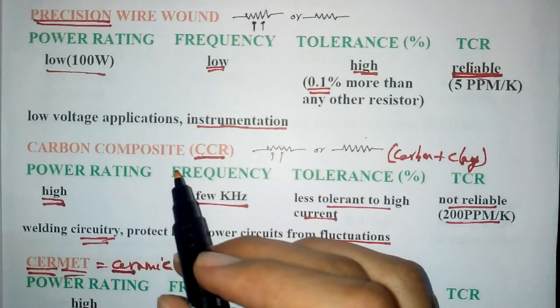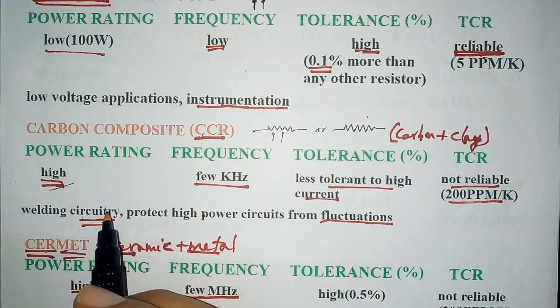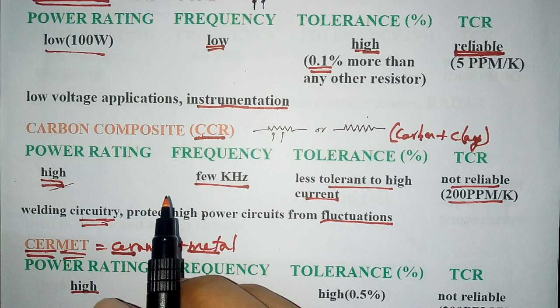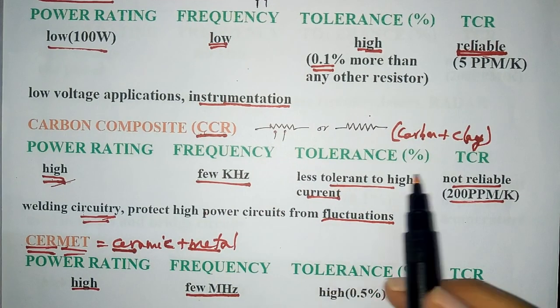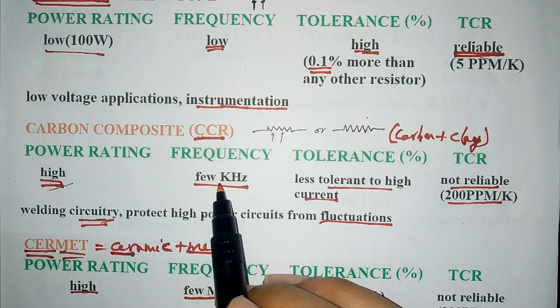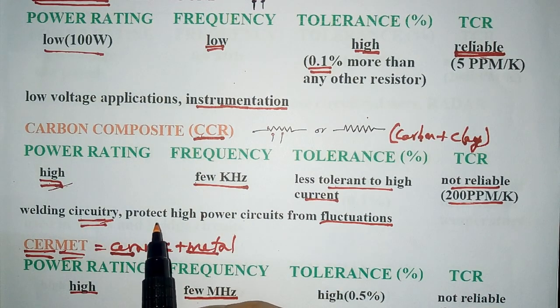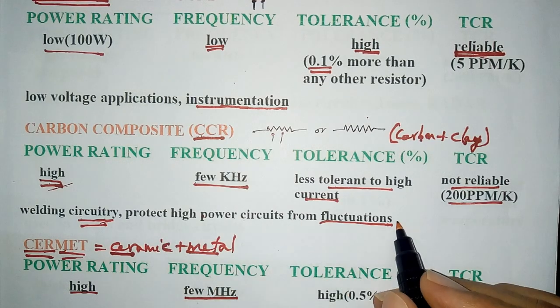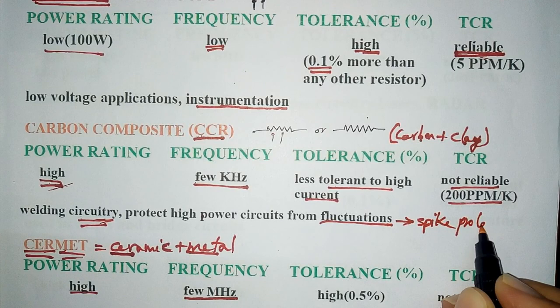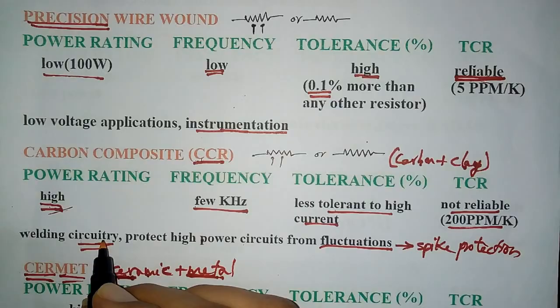Next, let's talk about CCR, carbon composite resistor. It is a mixture of carbon and clay on a ceramic base. It is used in high power applications but is not commonly preferred. Its power rating is very high, but it is less tolerant to high current. TCR is not reliable and its frequency stability is very low. These resistors are generally used for welding circuitry and in high power circuits for protection from fluctuations, spike protection for high power circuits like in welding circuitry.